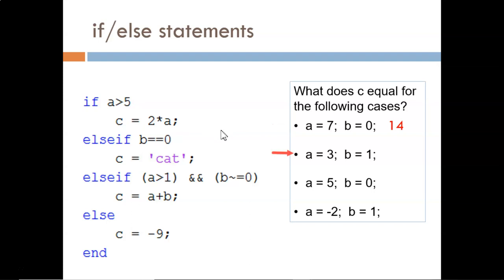Now for the second set of values. First condition, is 3 bigger than 5? False. Second condition, is 1 equal to 0? False. Third condition uses an and, so both of these relational operators must be true. Is 3 bigger than 1? True. And is 1 not equal to 0? Also true. So this branch is chosen, and c equals 3 plus 1.